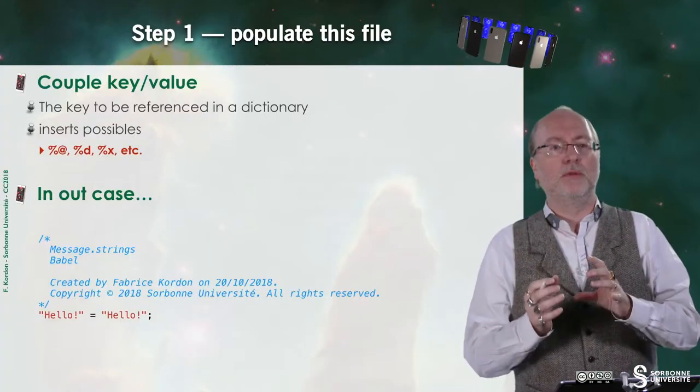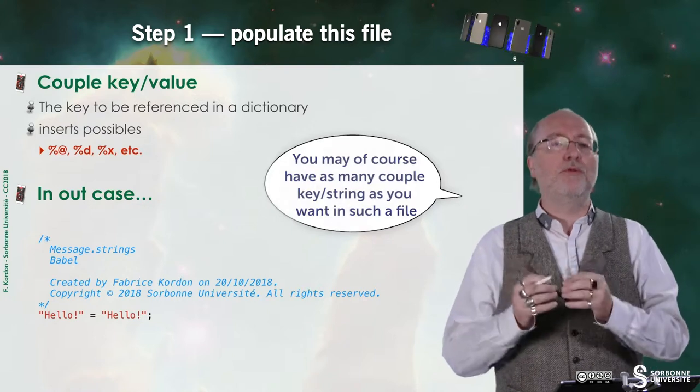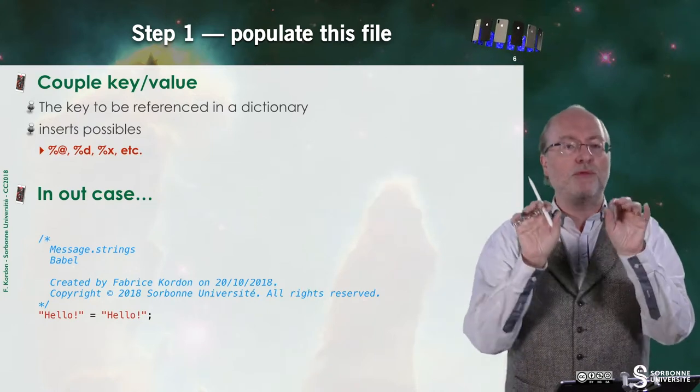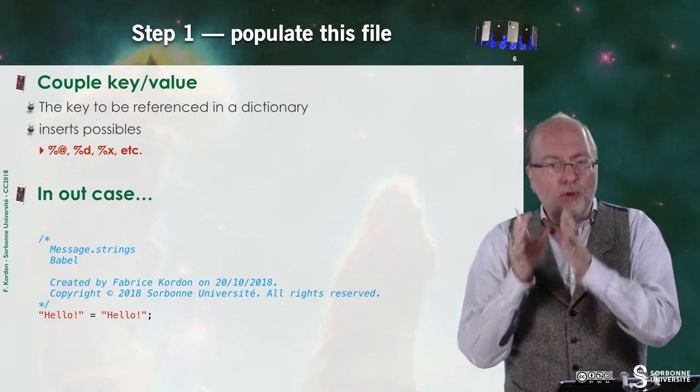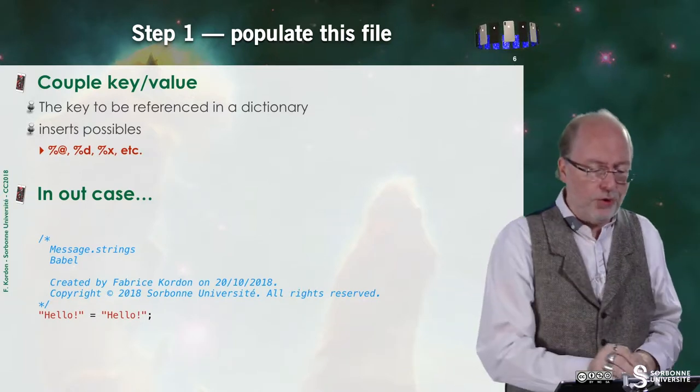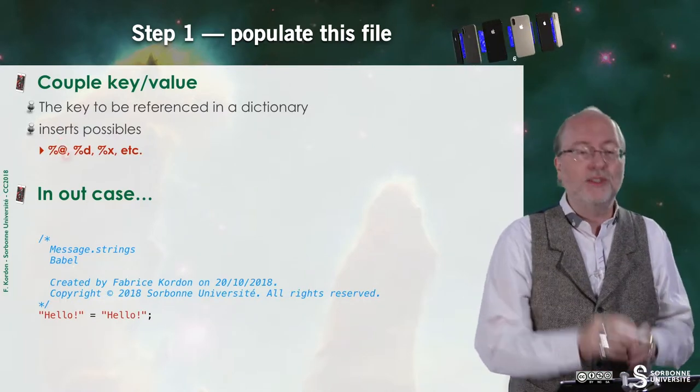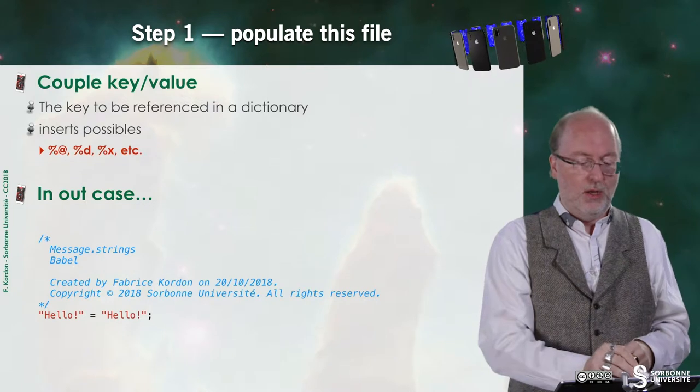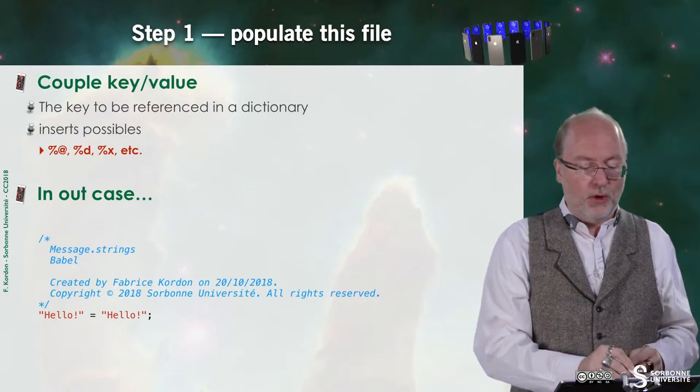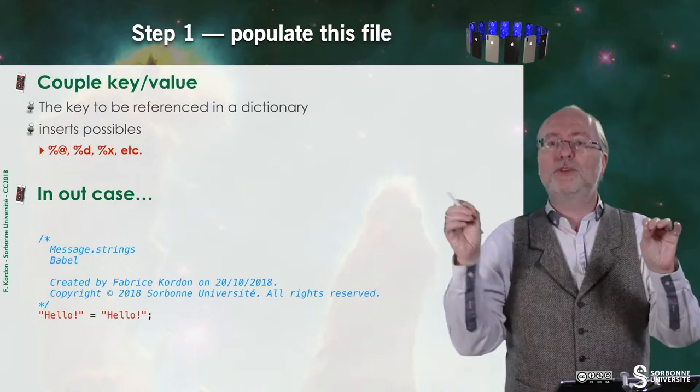It's important because I can have several of these files and, of course, I will have to refer to one of these files when I'm using the localization mechanism. And then I create it. And you have this new file that is totally empty. So then you have to populate this file. And in fact, this file is composed of a couple key value. So the key will be referenced in a dictionary and the value will be retrieved from the key, and that it will correspond to the sentence in a given language. And of course, you may have inserts as possible. So if you want to insert a string or an integer value or an hexadecimal value, etc., you can do it in your sentence.